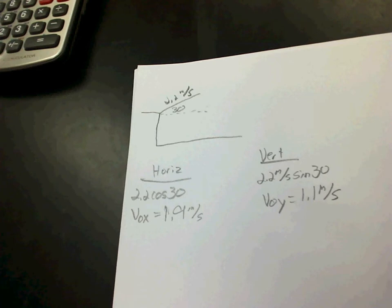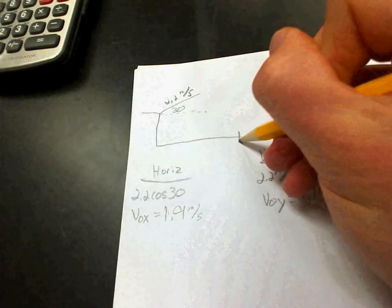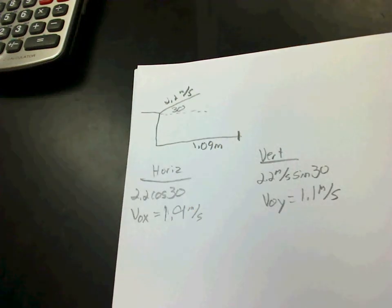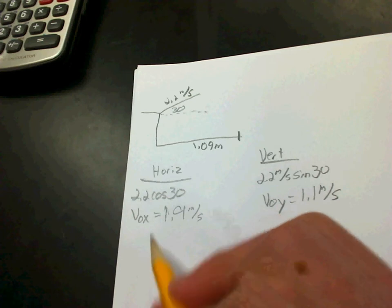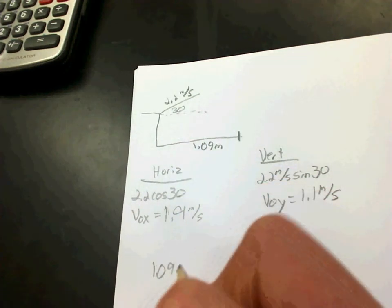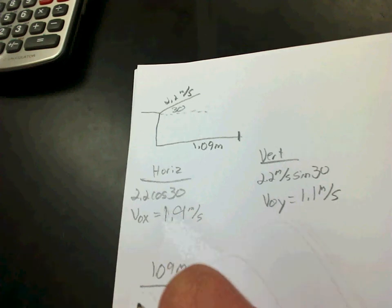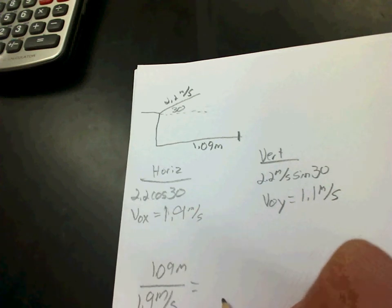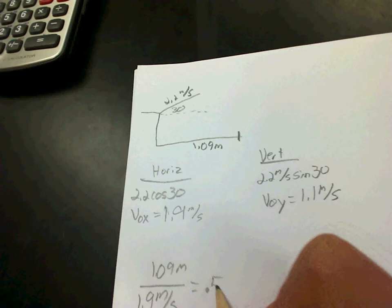Part B asked you, how long did she spend in the air? And it gave you a piece of information that I think some of you might have been missing. It actually gave 1.09 meters. So she landed 1.09 meters away from where she was launched from. So that's what we need, because we're trying to figure out our time. And so if we take our horizontal distance, 1.09 meters, divide that by our velocity, this will actually give you what time is. And punching it into your calculator, you get 0.57 seconds.